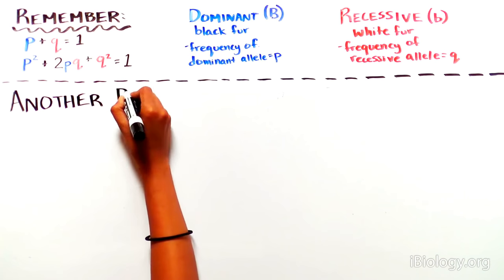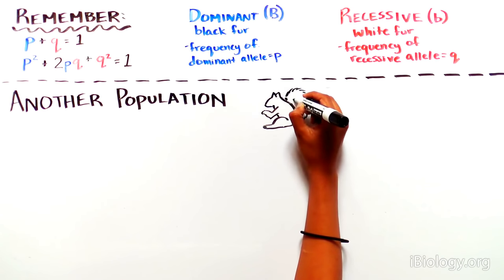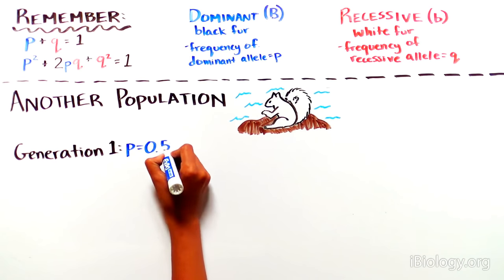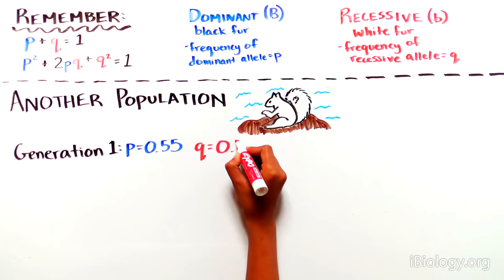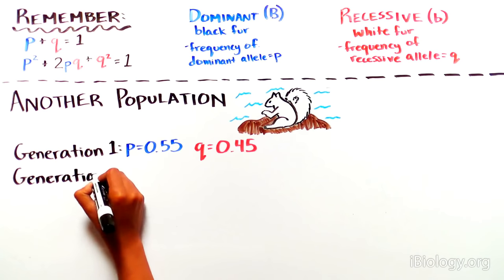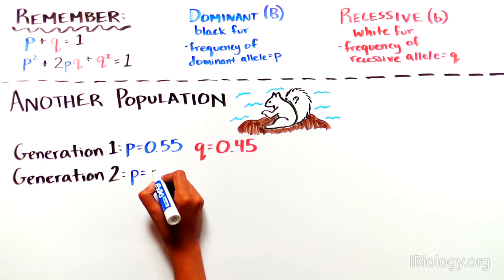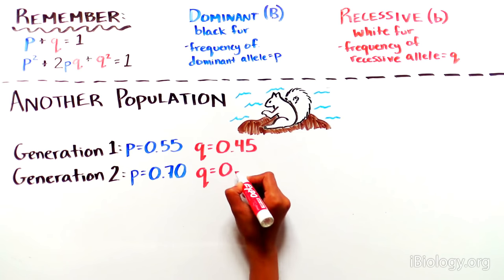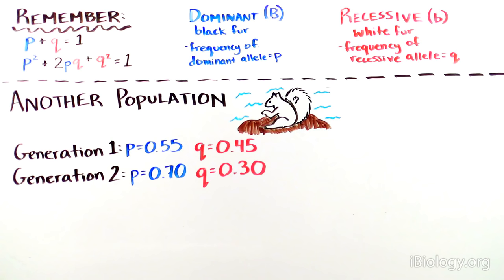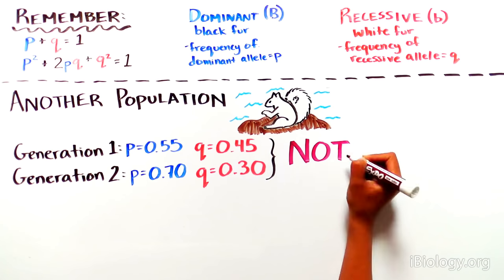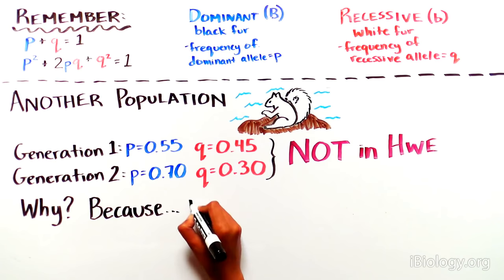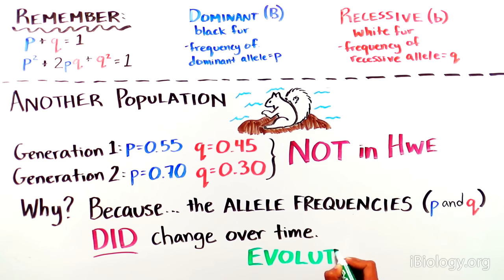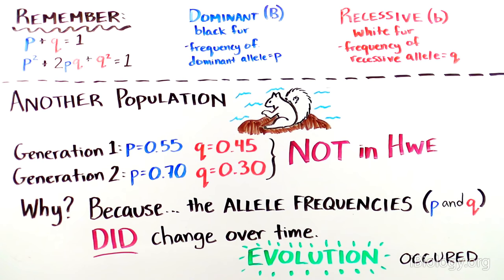Example number two. You are also studying a population of squirrels that live on a nearby beach. In the first generation they had P = 0.55 and Q = 0.45. In the second generation, you find that the frequency of the dominant allele P is 0.7 and the frequency of the recessive allele Q is 0.3. This population is not in Hardy-Weinberg equilibrium since the allele frequencies did change over generations, so we reject the null hypothesis and can say that this population evolved.